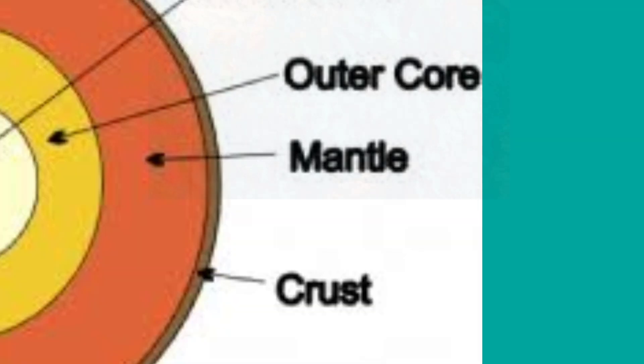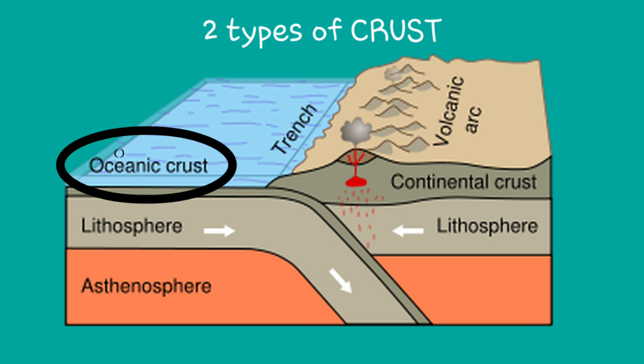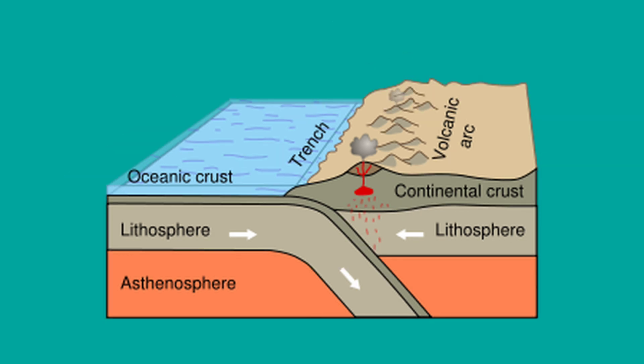There are two different types of crust: the oceanic and continental crusts. The thin oceanic crust that lies beneath the oceanic floors is about 5 to 10 kilometers thick.